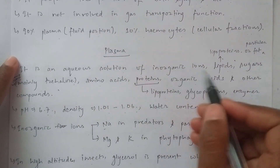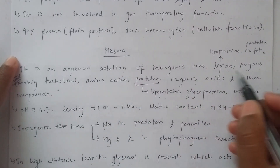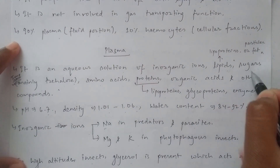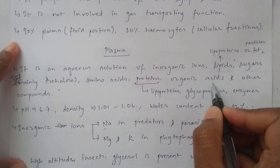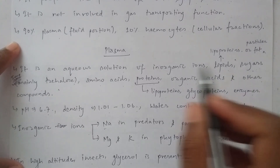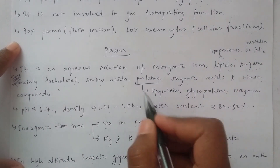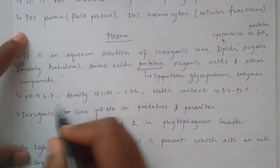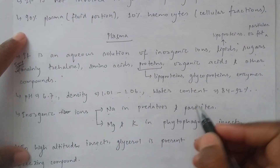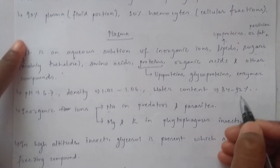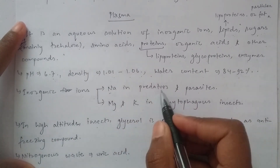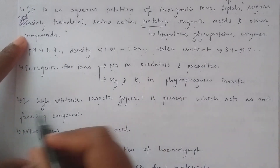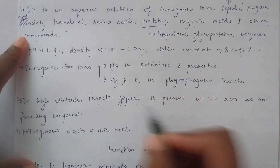Hemolymph consists of 90% plasma (the fluid portion) and 10% hemocytes (the cellular fraction). Plasma is an aqueous solution containing inorganic ions, lipids present as lipoproteins, and sugars. The pH is 6.7 and density is 1.012 to 1.06. Water content is 84 to 92%. In phytophagous insects, potassium predominates, while in high-altitude insects, glycerol serves as an antifreeze compound.